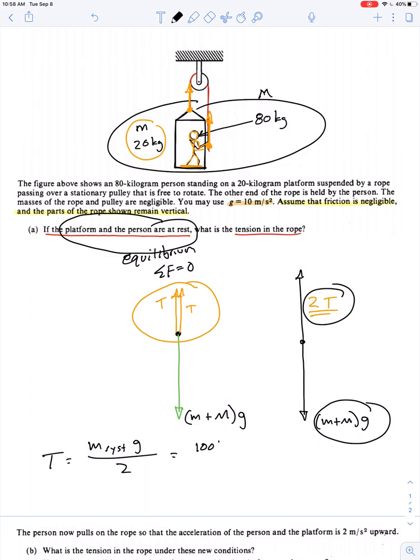Which would be 100 kilograms times 10 meters per second squared all divided by 2. This is 500 newtons.